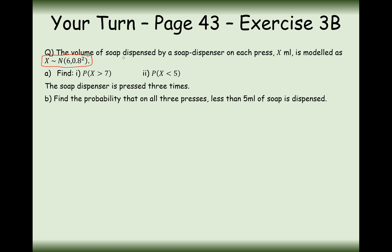In this question, the volume of soap dispensed by a soap dispenser on each press is x millilitres, modelled by the normal distribution where 6 is the mean with a standard deviation of 0.8. Part A finds the probability that x is more than 7. Use the lower boundary of 7, upper boundary of 99, standard deviation 0.8, mean of 6. We get a final answer of 0.1056.